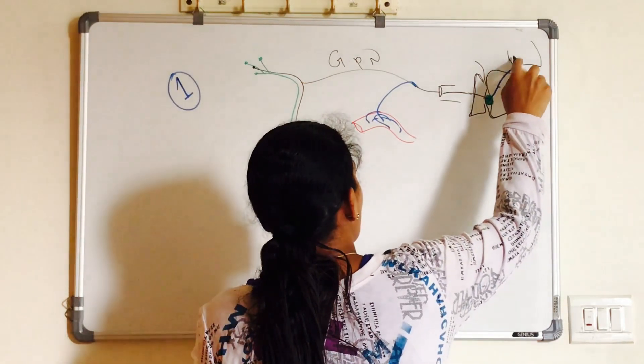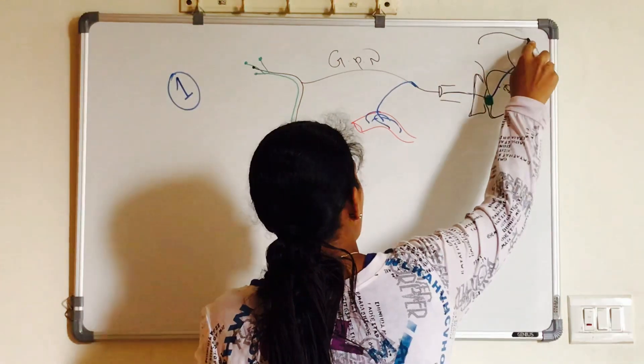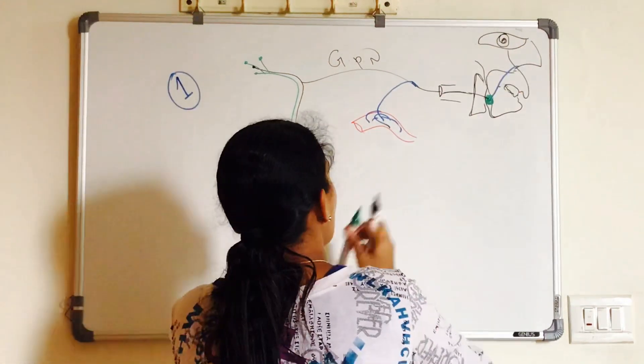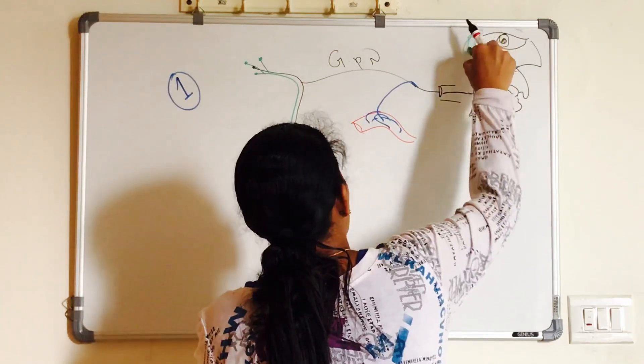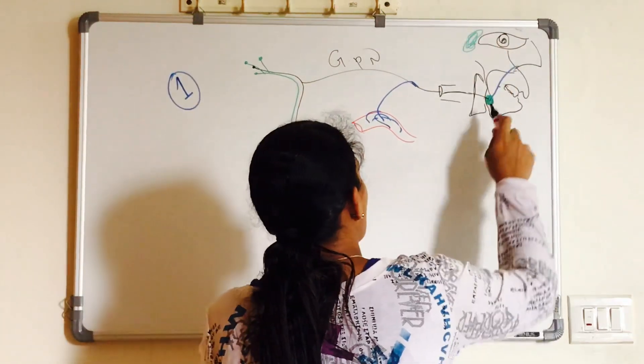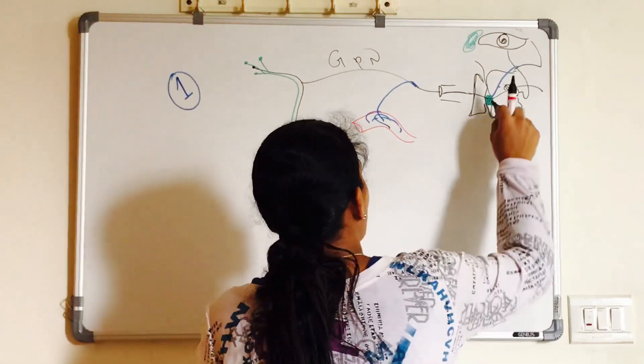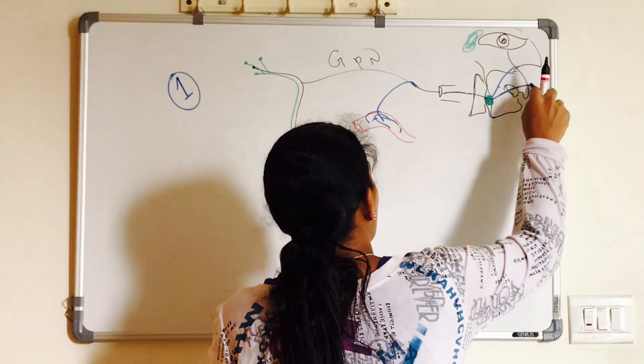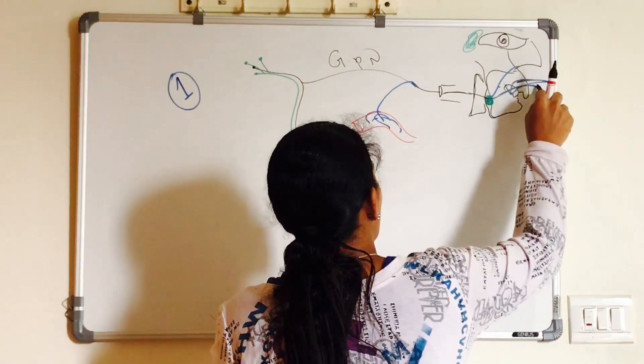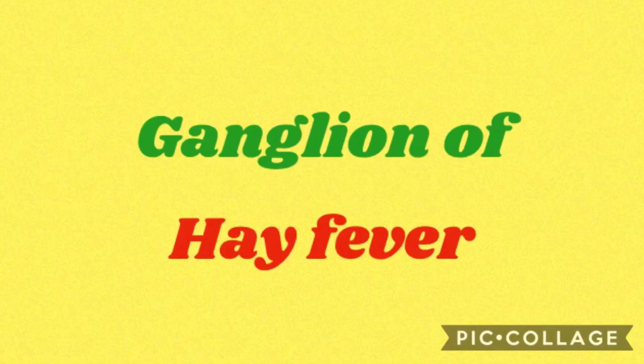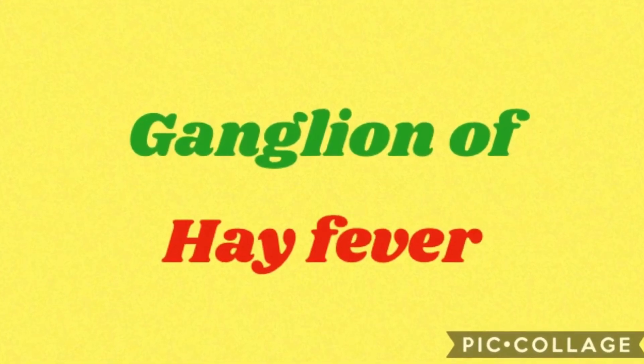So in case of allergic rhinitis, this ganglion is getting stimulated which causes secretion in all these glands. So running eyes and running nose occurs when this pterygopalatine ganglion is stimulated. Hence, this ganglion is otherwise called ganglion of hay fever.